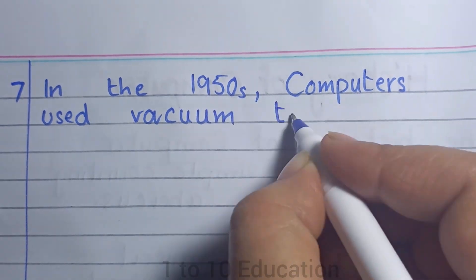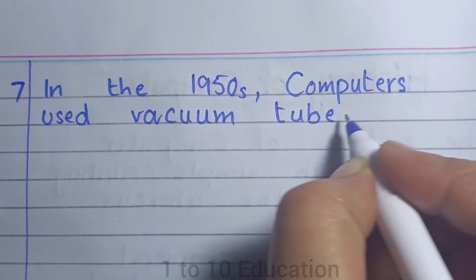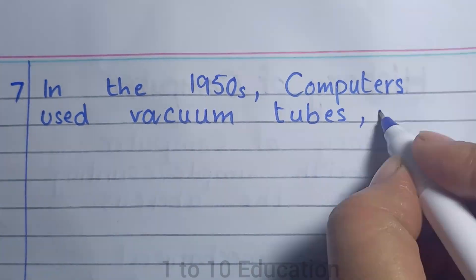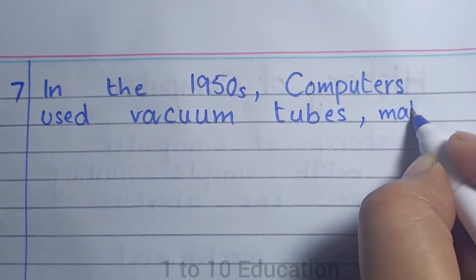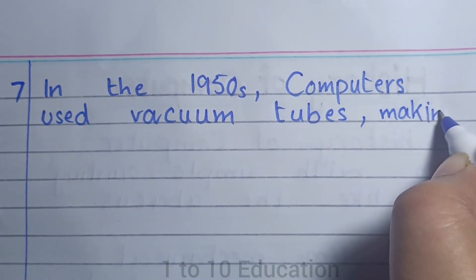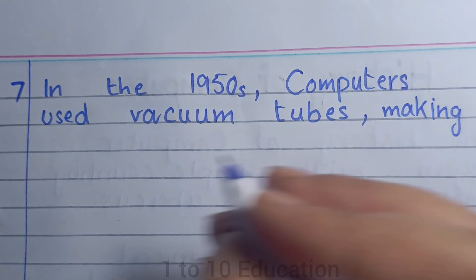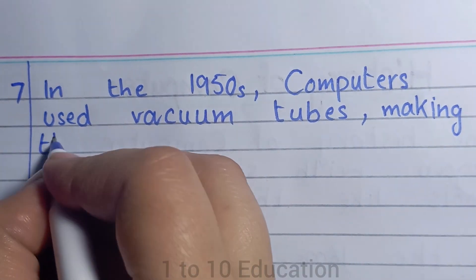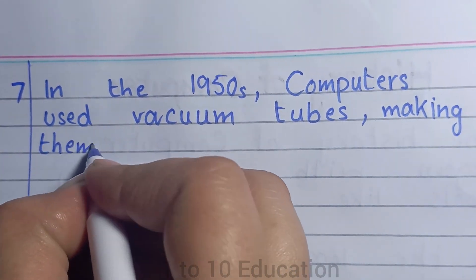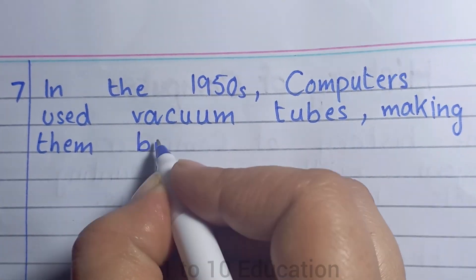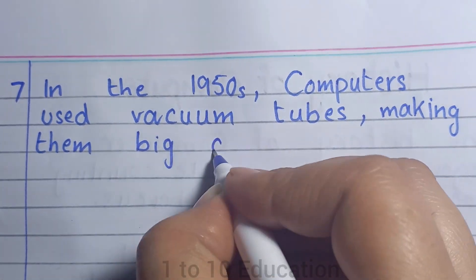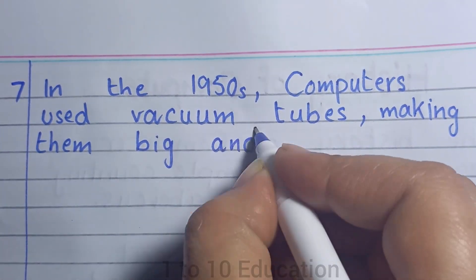In the 1950s, computers used vacuum tubes, making them big and slow.